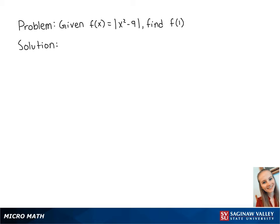For this problem, we want to find f of 1 when f of x is equal to the absolute value of x squared minus 9. To find f of 1, we need to plug in 1 for x. So this becomes the absolute value of 1 squared minus 9.